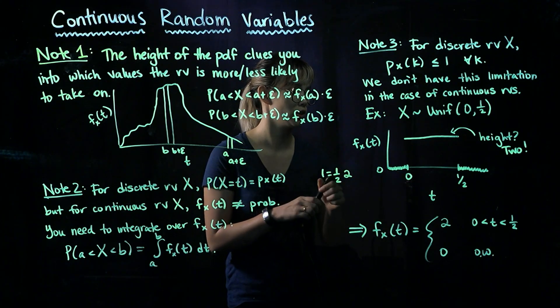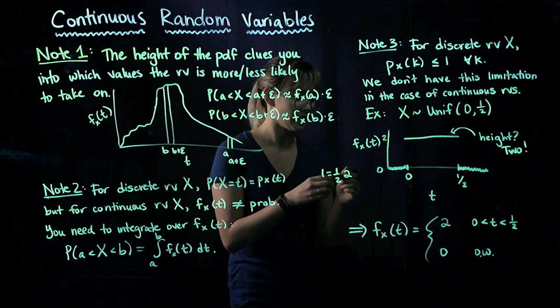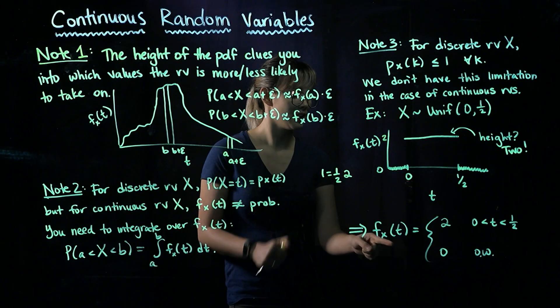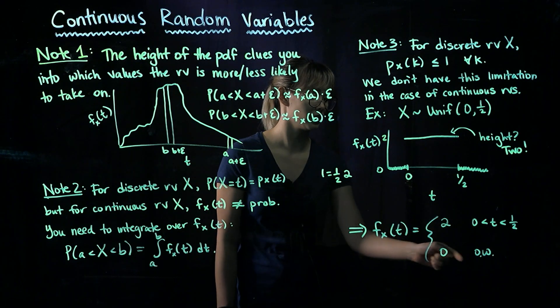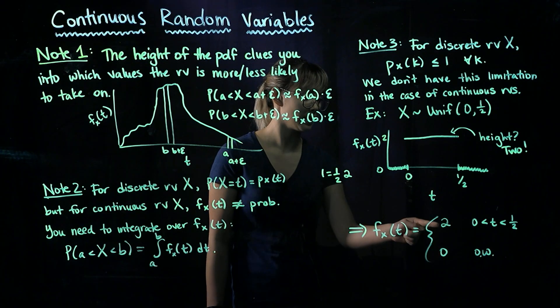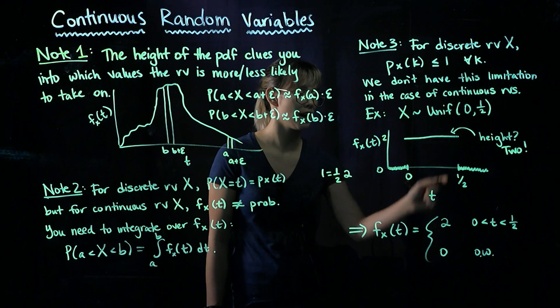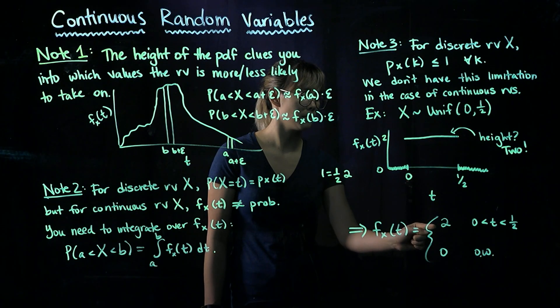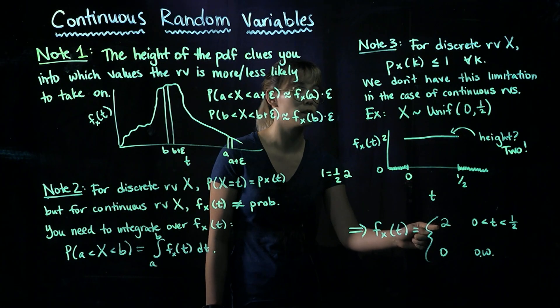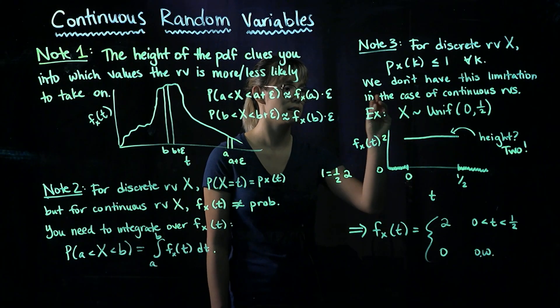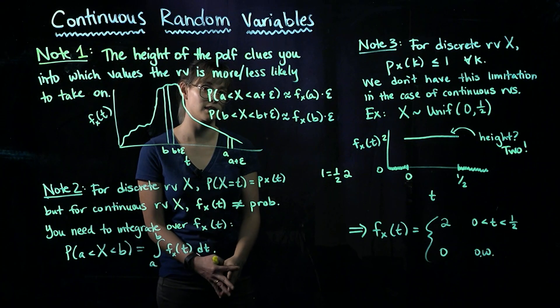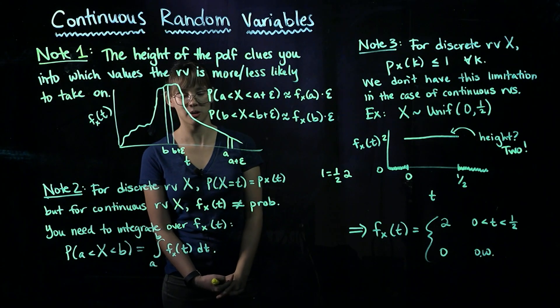So this height is equal to 2. So that means that our PDF is equal to 2 when t is between 0 and 1/2 and it's 0 otherwise. So here we can see for this uniform distribution from 0 to 1/2, we have our PDF equaling 2, which is definitely greater than 1. So we see definitely this limitation does not exist for continuous random variables.